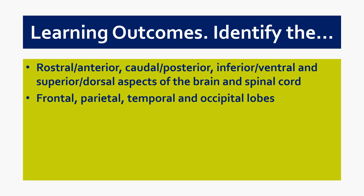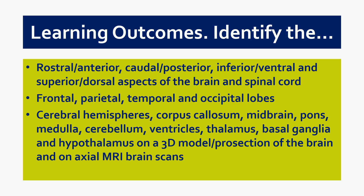Then we're going to talk through the four major lobes of the brain — frontal, parietal, temporal, and occipital. And then we're going to talk through a whole series of different brain regions, talk about where they are on 3D models and pro sections, and then briefly touch on axial brain scans.